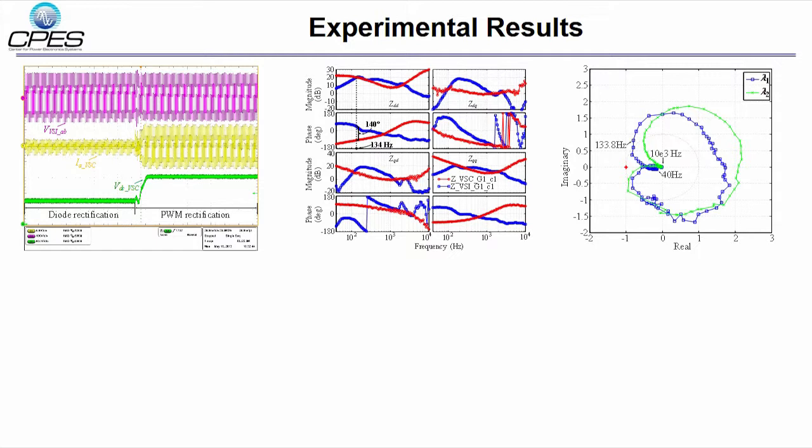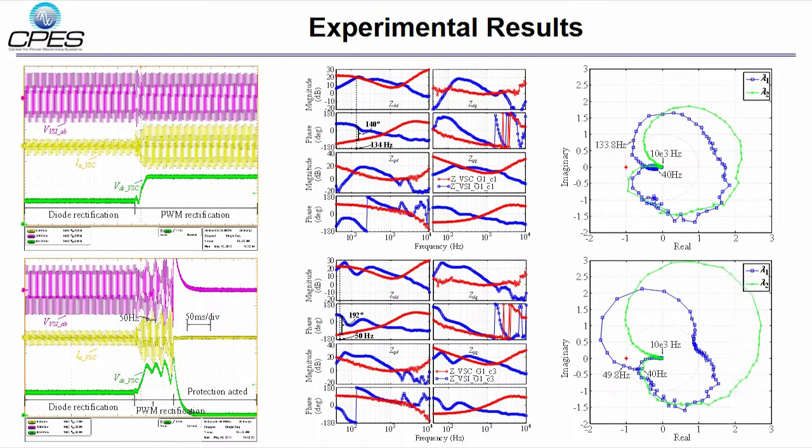Then, in the second experiment, the VSI output voltage control loop bandwidth is reduced. When the load converter is started, the system runs into unstable condition. The impedance measurement results as well as the generalized Nyquist plot show the same conclusion.